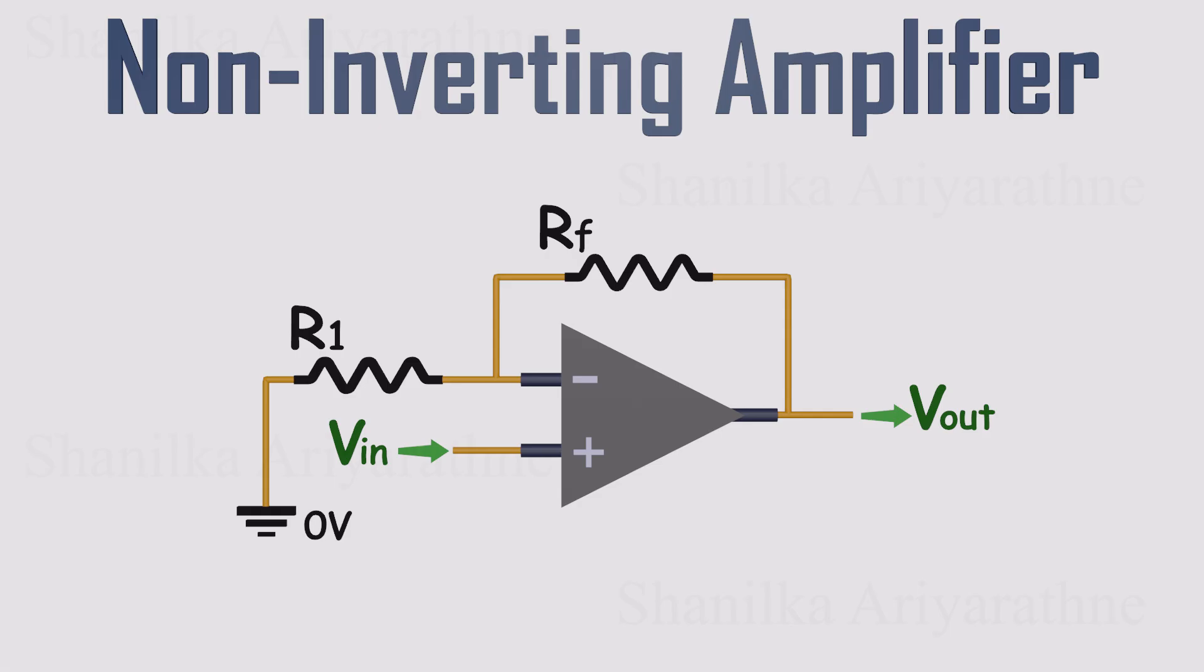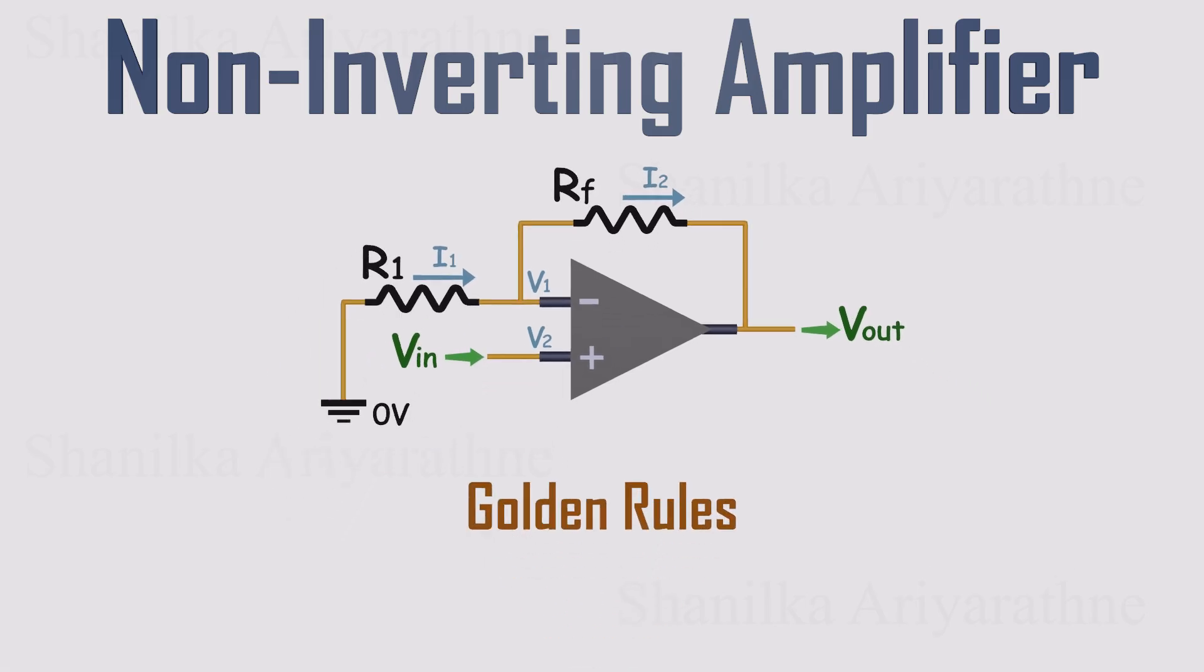Now let's go through it using the golden rules. Let's call the voltages at the inputs V1 and V2, and the currents through the resistors I1 and I2. Golden rule 1: no current flows into the op-amp inputs. That means the current through R1 is the same as the current through Rf. Golden rule 2: with negative feedback, the op-amp keeps the inverting input at the same voltage as the non-inverting input. Since the non-inverting input is where we applied Vin, the inverting input is also held at Vin.